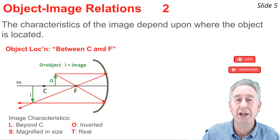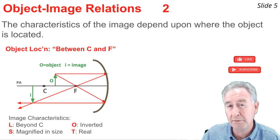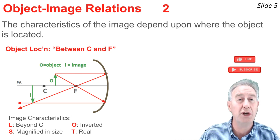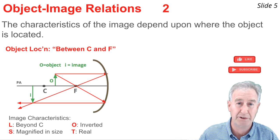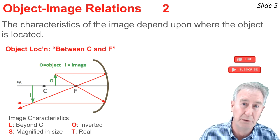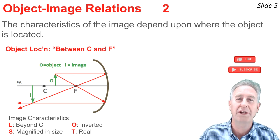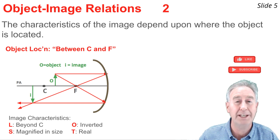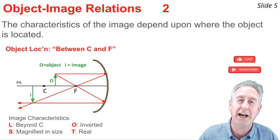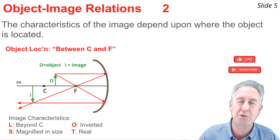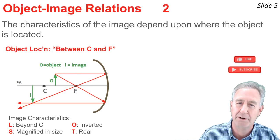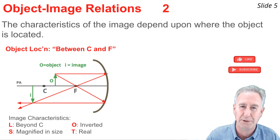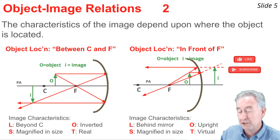In this situation, the object is located between the center of curvature and the focal point. The location of the image is beyond the center of curvature, or past the C point. The orientation is once more inverted. The size is magnified, meaning larger than the object itself, and the type is real, since the reflected light rays converge at the image location.